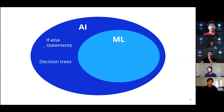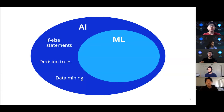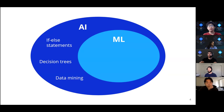Some things that fall into artificial intelligence are if-else statements, decision trees, and data mining — though this isn't a comprehensive overview. If-else statements might sound too simple to be AI, but that goes back to the point that as we expect more from computers, some things stop feeling like artificial intelligence. Certainly, if-else statements are a way for computers to make decisions.